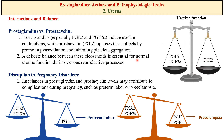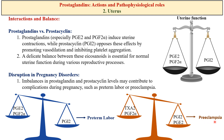A delicate balance between these eicosanoids is essential for normal uterine function during various reproductive processes. Imbalance in prostaglandin and prostacyclin levels may contribute to complications during pregnancy such as preterm labor or preeclampsia. Overproduction of PGE2 and PGF2α can lead to excessive uterine contractions causing preterm labor, while reduced prostacyclin results in reduced vasodilation and increased platelet aggregation, potentially leading to inadequate blood supply to the placenta and complications like preeclampsia — increased blood pressure during pregnancy.